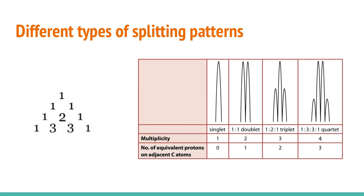Looking into the types of splitting patterns in a little bit more detail, generally you're only going to see a singlet, doublet, triplet, or quartet. A singlet, we say it has a multiplicity of one, essentially multiplicity just means the number of peaks. And so a singlet has one peak. And that means that it has zero equivalent protons on an adjacent carbon atom.